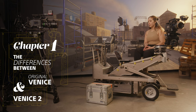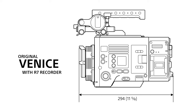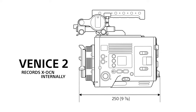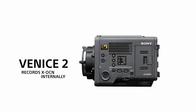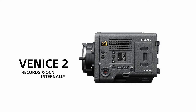We're going to start out by covering the differences between original Venice and Venice 2. The Venice 2 records XOCN internally, unlike the original Venice, which requires the R7 recorder. This means the Venice 2 is 44 millimeters shorter and about one pound wider.